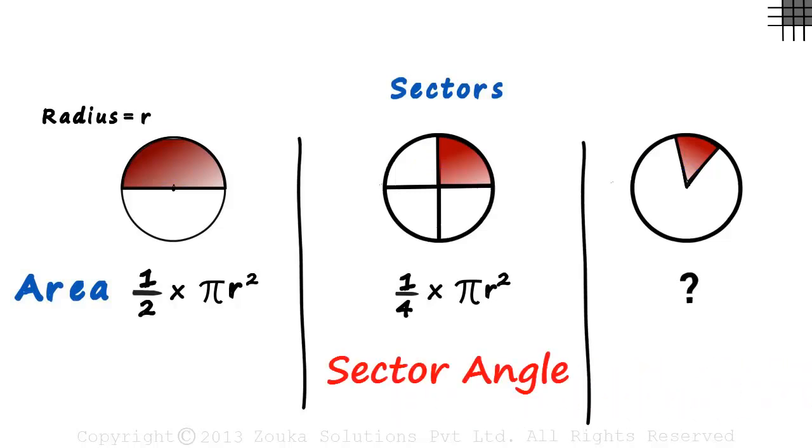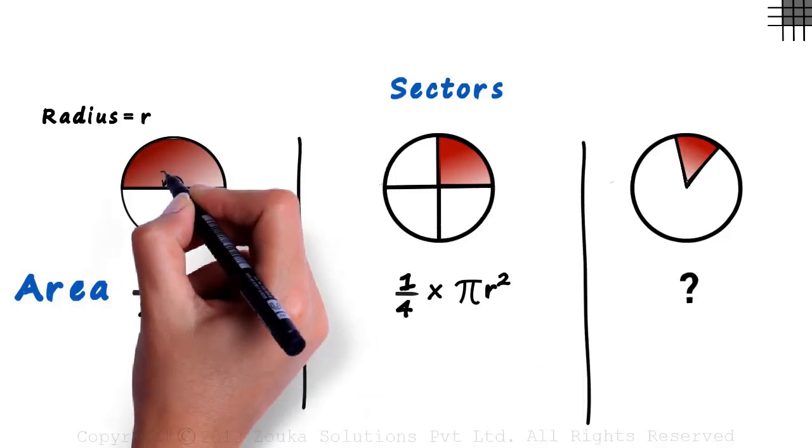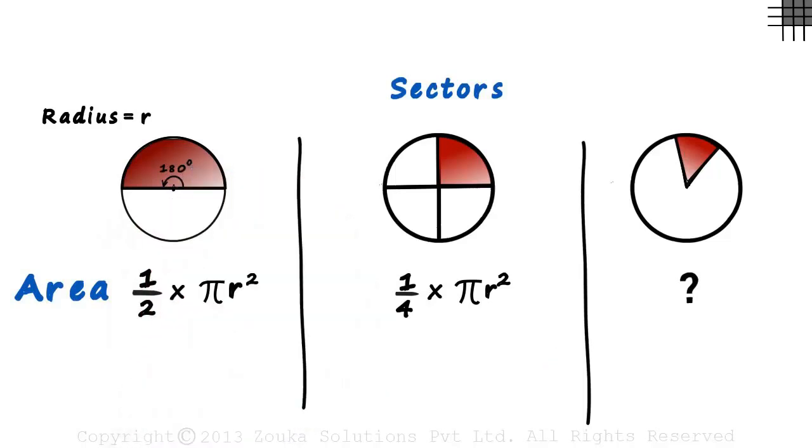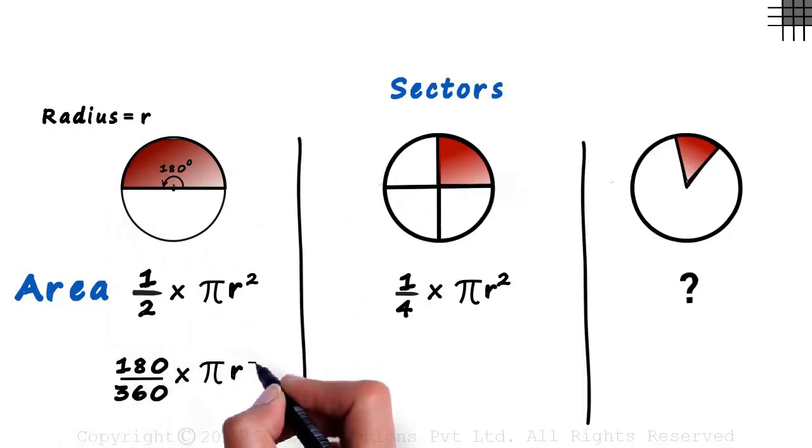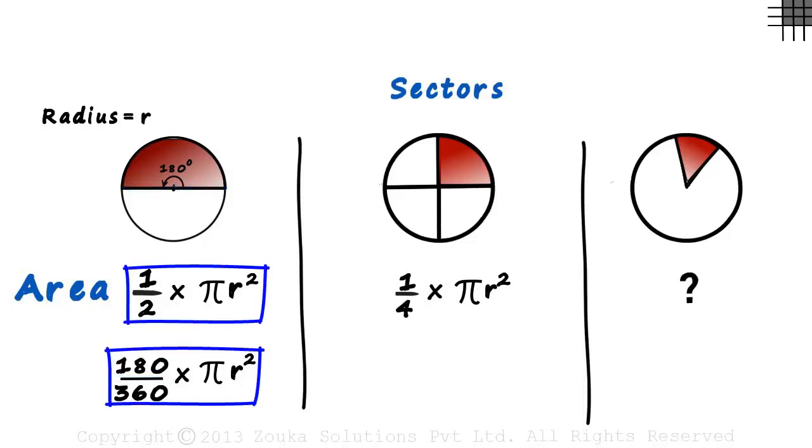In the first case, the sector angle is 180 degrees. Hence the area of the sector will be 180 by 360 multiplied by pi r squared. Out of the total 360 degrees, these two radii have 180 degrees between them. This value is the same as this value as the ratio equals half.